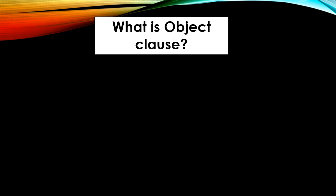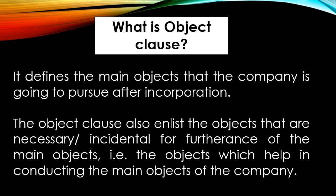First of all, what is object clause? The object clause is the third point of the memorandum of association, which tells how the company will work after incorporation. The object clause defines the main objects of the company that the company is going to pursue after incorporation.